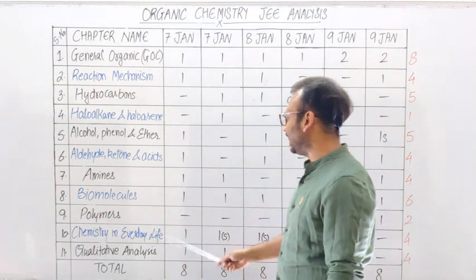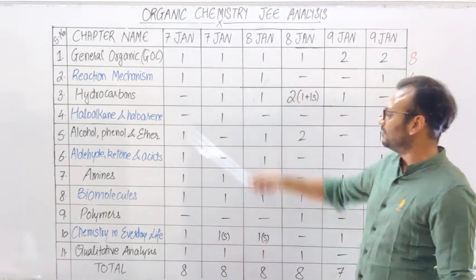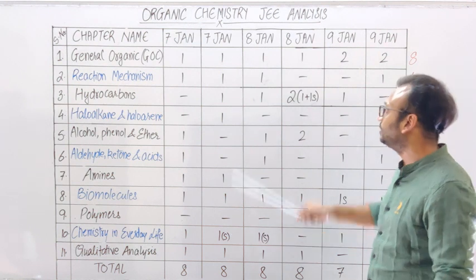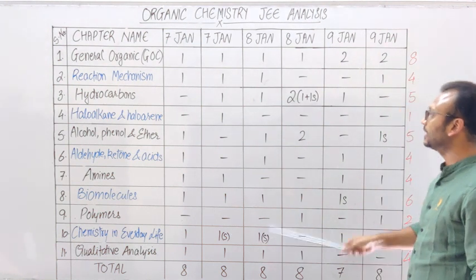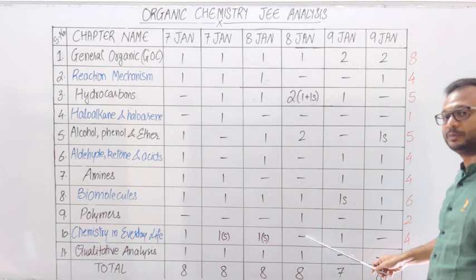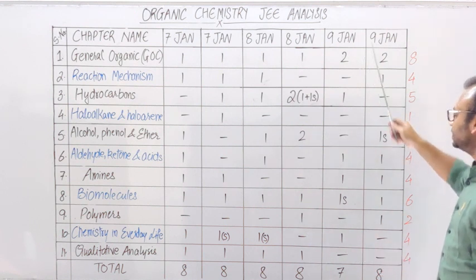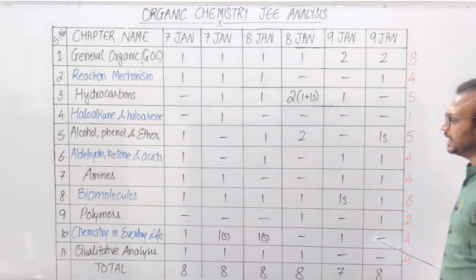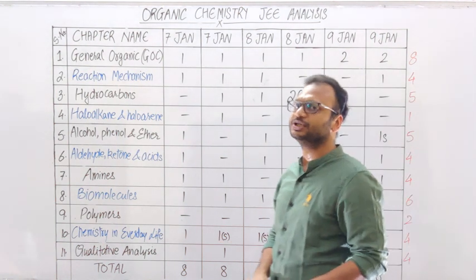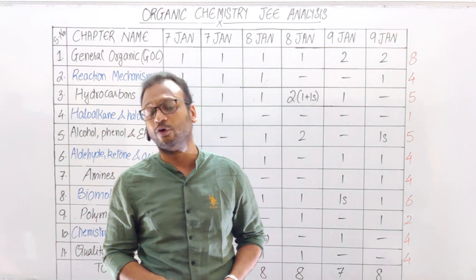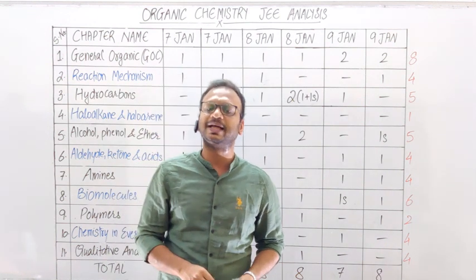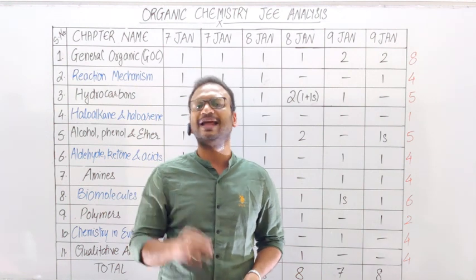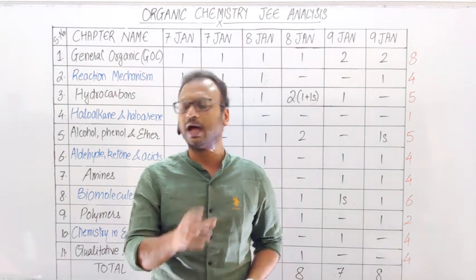फिर आता है Chemistry in Everyday Life। 7th January Morning Shift में 1 question, Evening Shift में 1 question, 8th January Morning Shift में numerical type का question, Evening Shift में कोई question नहीं, 9th January Morning Shift में 1 question, Evening Shift में question नहीं। Total 4 questions — mostly papers में 1 question तो आएगा ही, एक-दो sets में नहीं भी हो सकता।